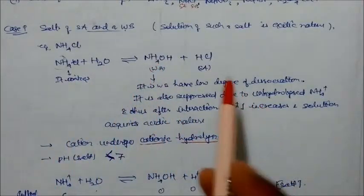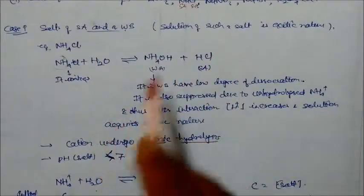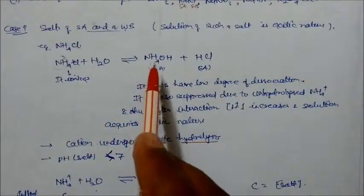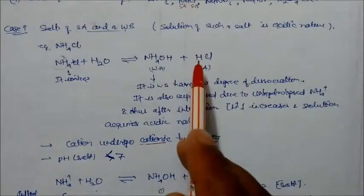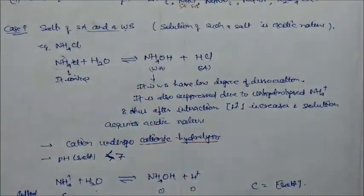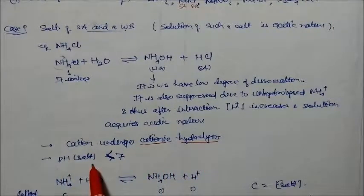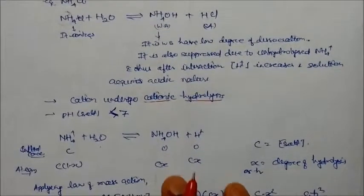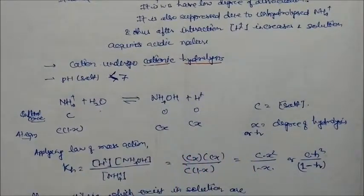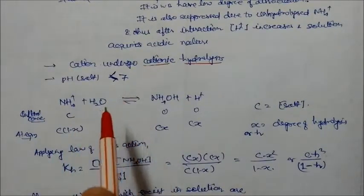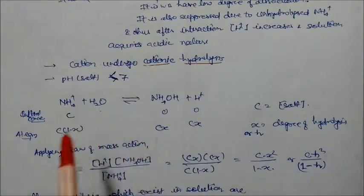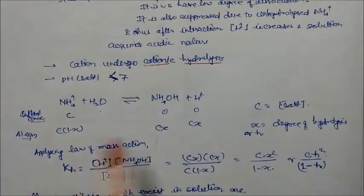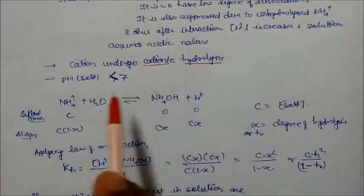Due to the less ionization of ammonium hydroxide, the concentration of H⁺ increases in solution, making it acidic. This is called cationic hydrolysis. The pH of a salt of strong acid and weak base dissolved in water will always be less than 7. We will study three things: the hydrolysis constant KH, the degree of hydrolysis H, and the pH of the solution.